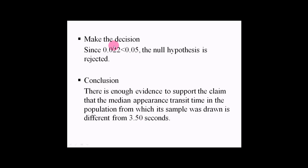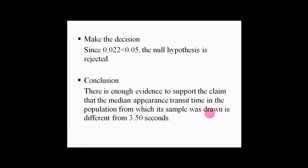Then we can make the decision. Since 0.022 is less than 0.05, which is the value of alpha, the null hypothesis is rejected. The conclusion is: there is enough evidence to support the claim that the median appearance transit time in the population from which the sample was drawn is different from 3.50 seconds.